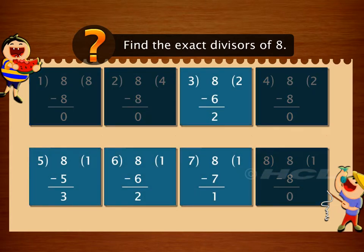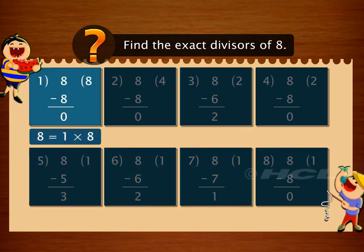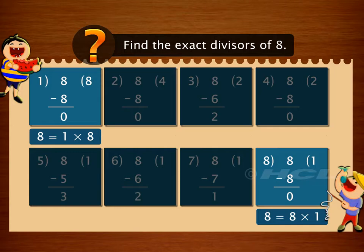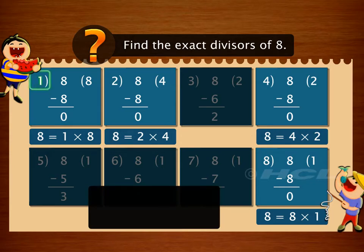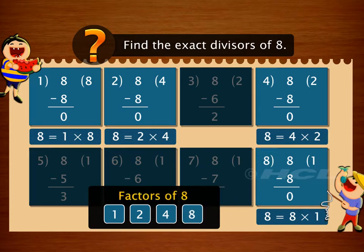Eight can be written as a product of one and eight and of two and four. So the numbers one, two, four, and eight are the factors of eight.